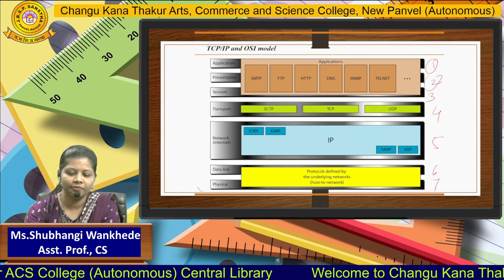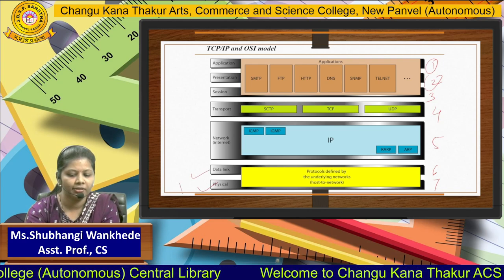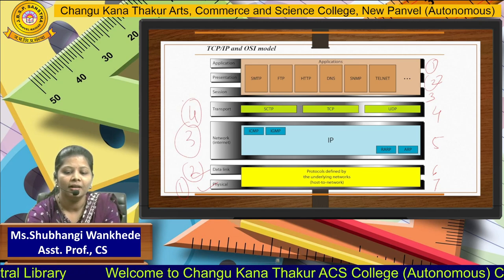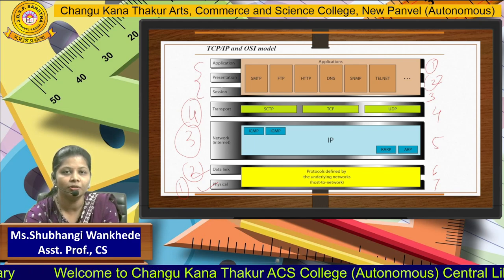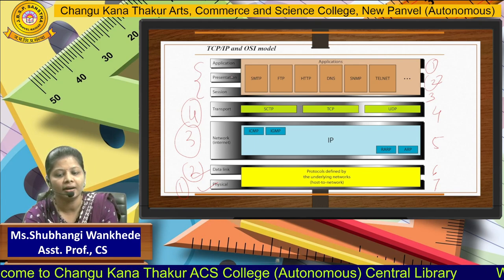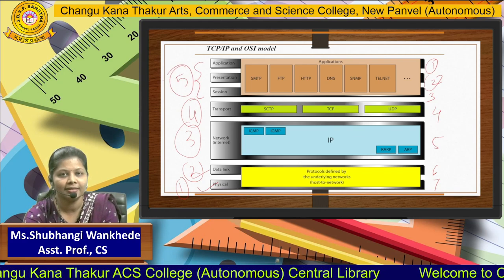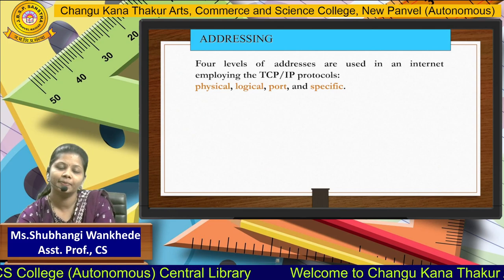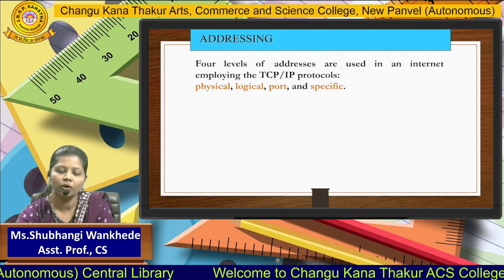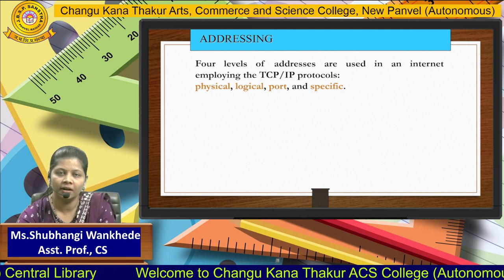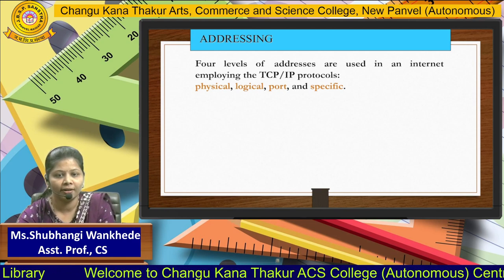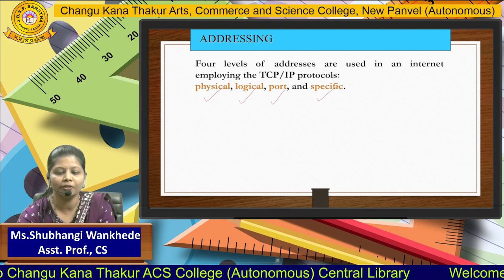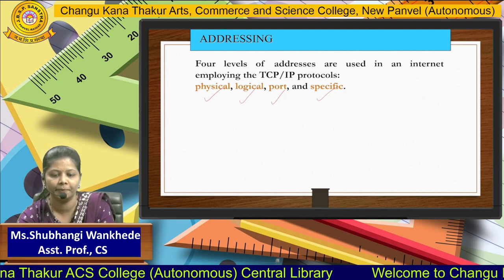The five layers are: physical layer, data link layer, network layer, transport layer, and the fifth layer is formed by combining the three layers from OSI — session, presentation, and application — which together form the application layer of the TCP/IP protocol suite. The TCP/IP protocol suite is majorly responsible for addressing.